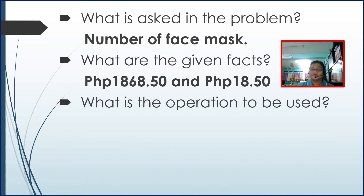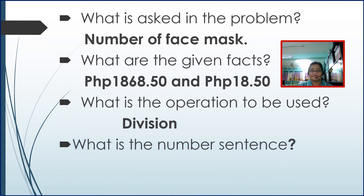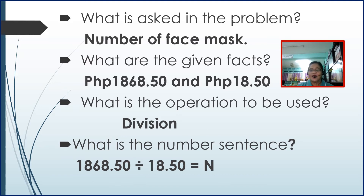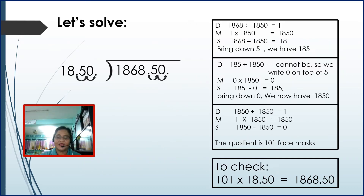Next question: what is the operation to be used? Very good — we have to use division. What is the number sentence? Correct — the number sentence is one thousand eight hundred sixty-eight pesos and 50 centavos divided by 18 pesos and 50 centavos equals n.